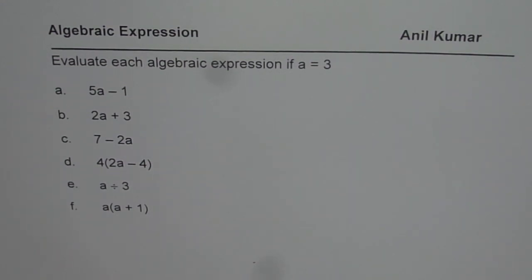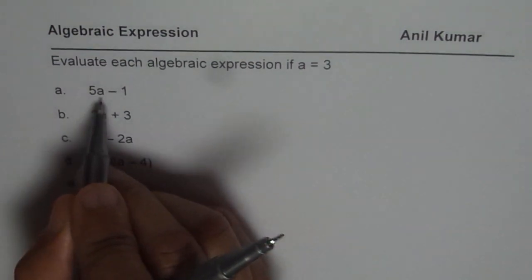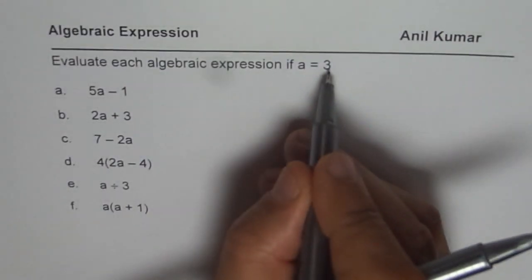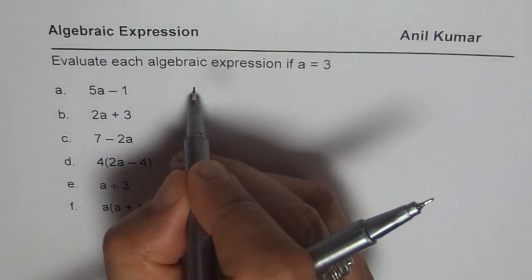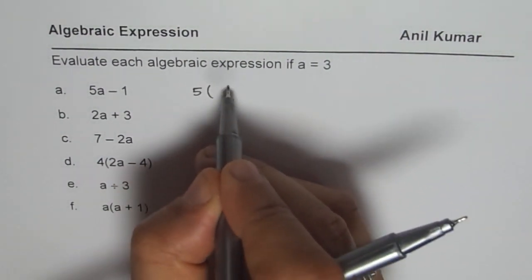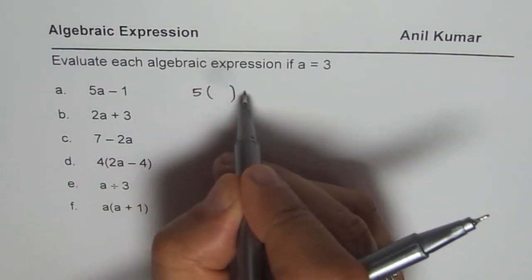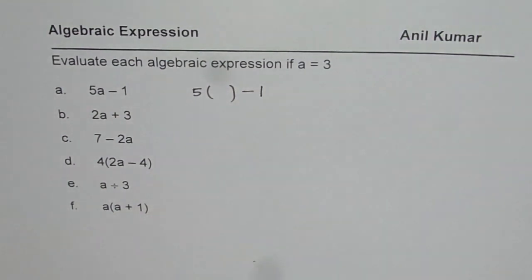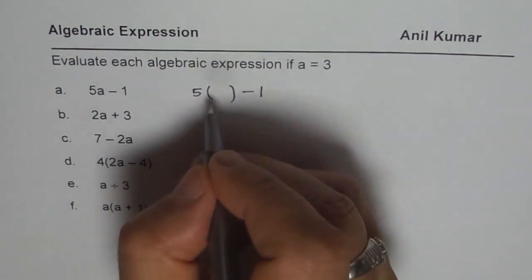Let's begin with the first one. It is 5 times a minus 1. In words, you could say one less than five times a number. So when I say 5 times a minus 1 and a is 3, it means I am going to replace a with 3 in this expression. We are given the value of a, which is 3.